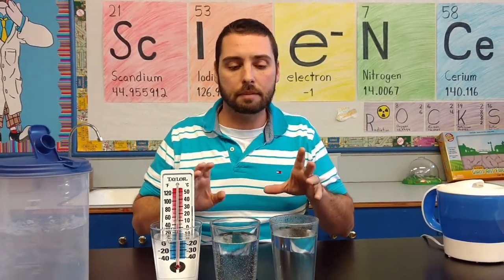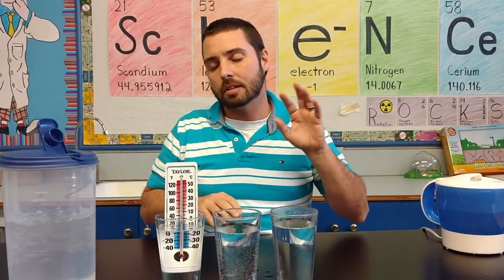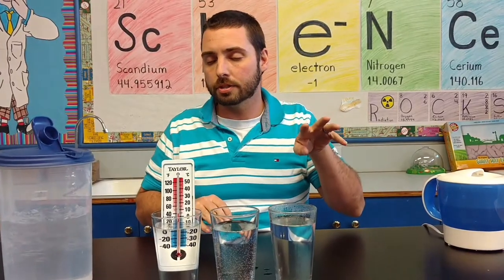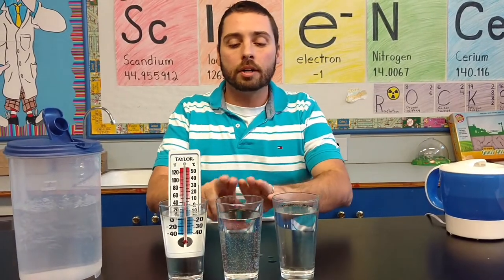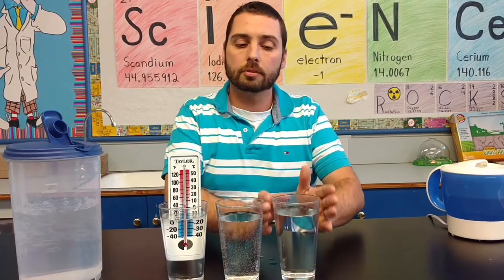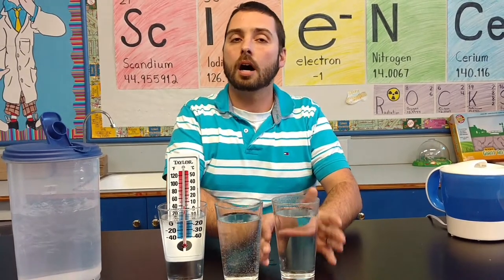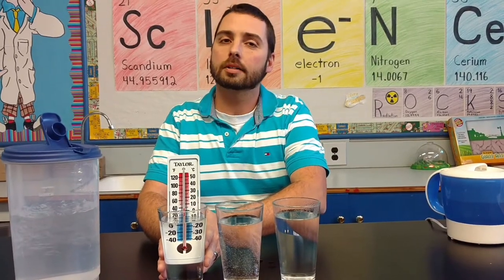And typically, I have a little lab sheet with three different columns or rows with one where they record the temperature of the room temperature water, another where they record the temperature of the hot water, and then another where they record the temperature of the ice cold water.